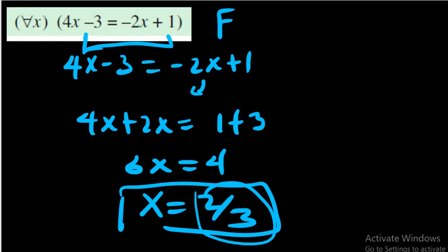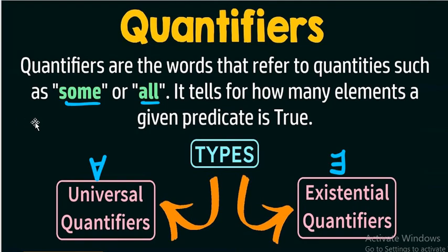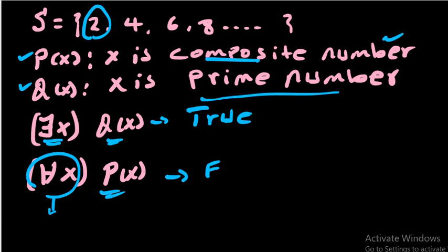So these are some of the questions solved, and this is the meaning of quantifiers. Remember: the universal quantifier is sensitive to being false — one element is enough to make 'for all x' false. The existential quantifier is sensitive to being true — one number satisfying the condition is enough. Don't forget to subscribe, like, and comment. Thank you for watching.